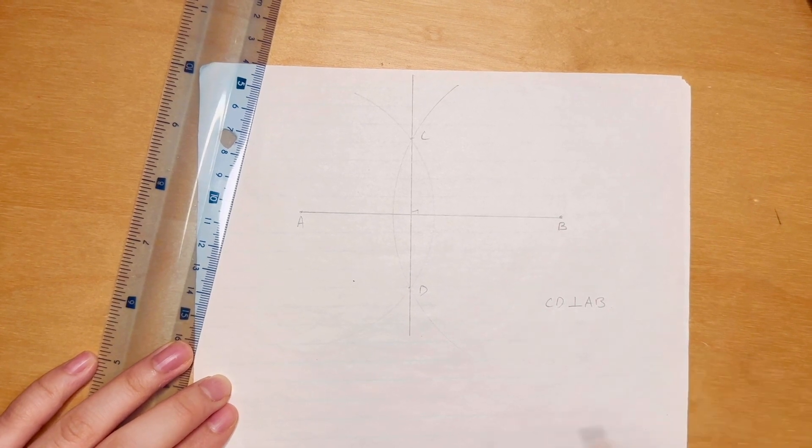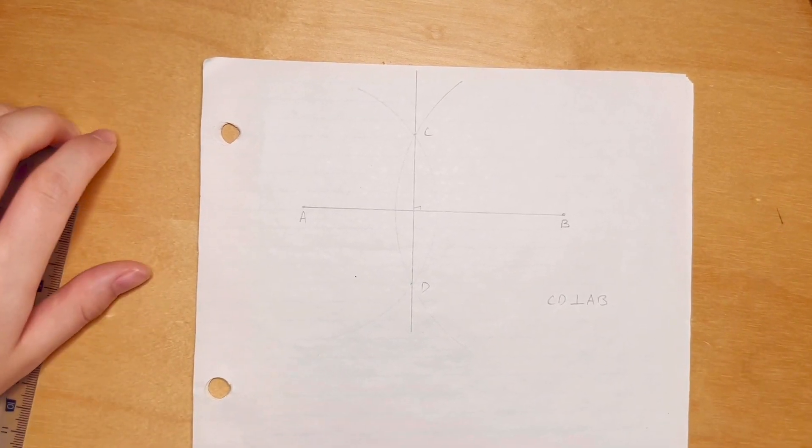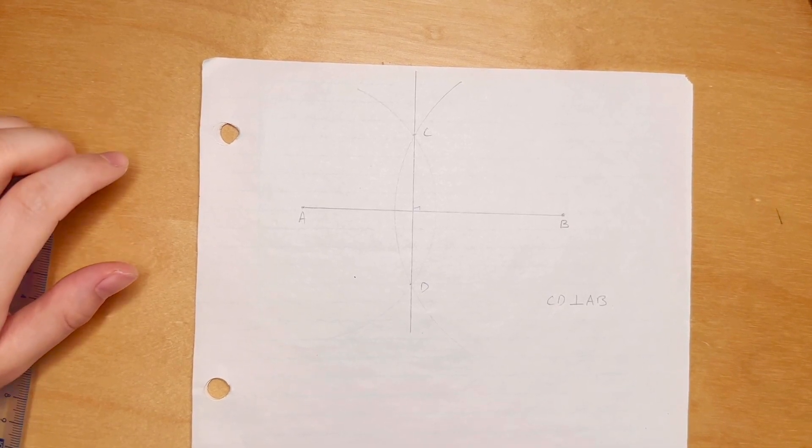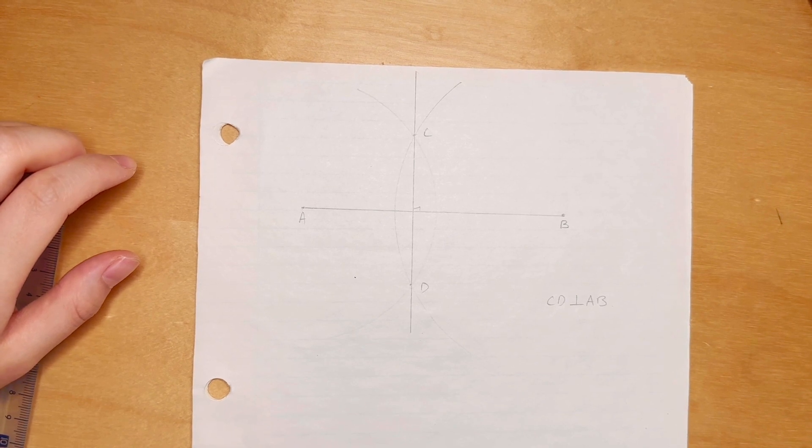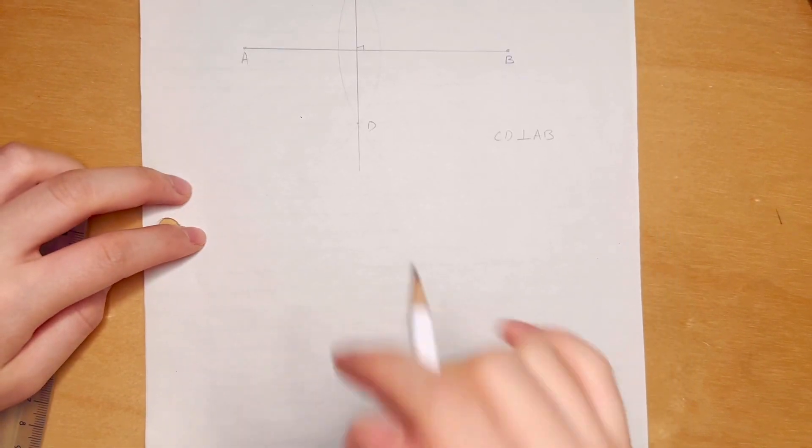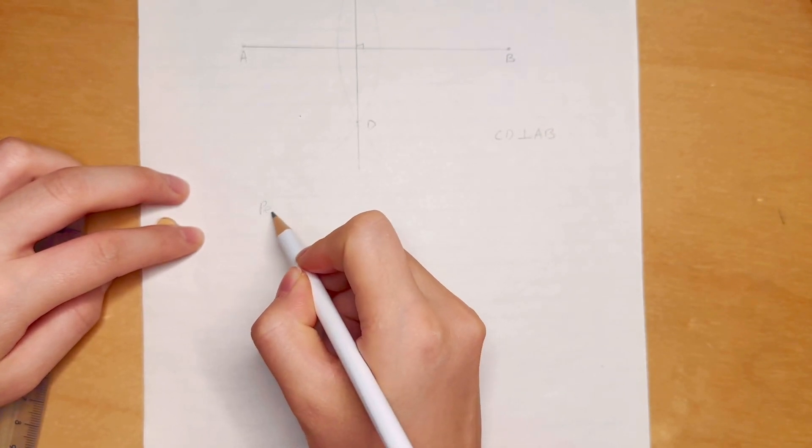What if we want something that is not only perpendicular but also bisecting AB? So then we call it a perpendicular bisector. I am still going to give you a line segment AB, and notice that these methods work for any line segment.